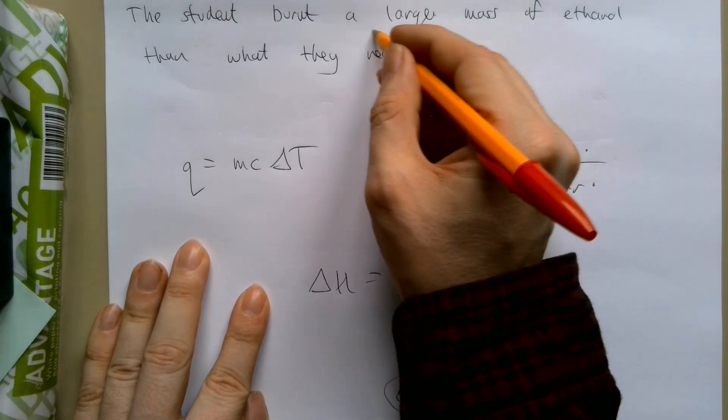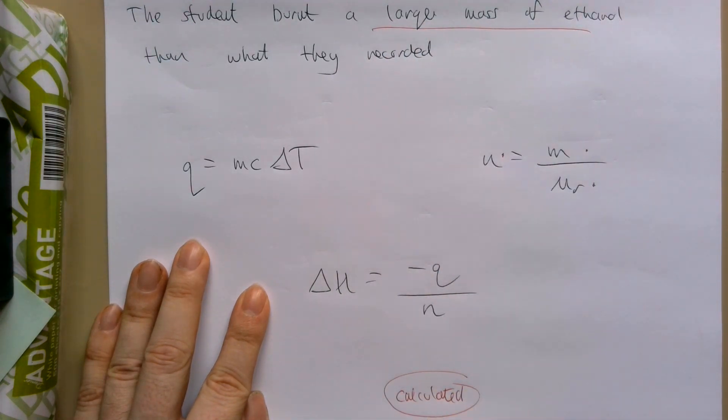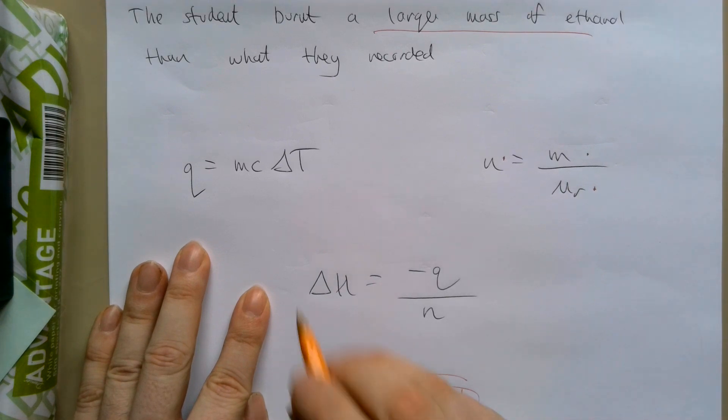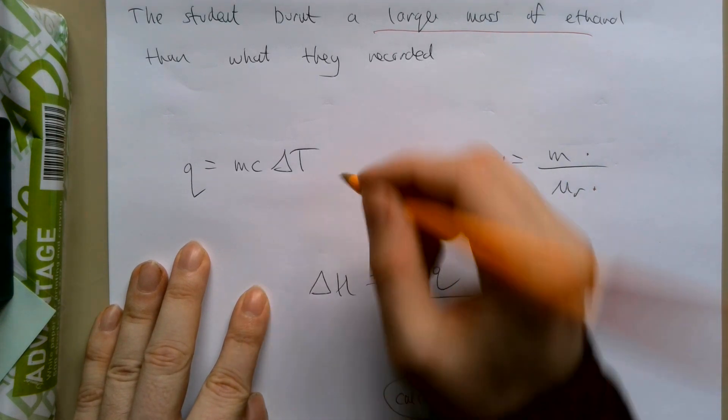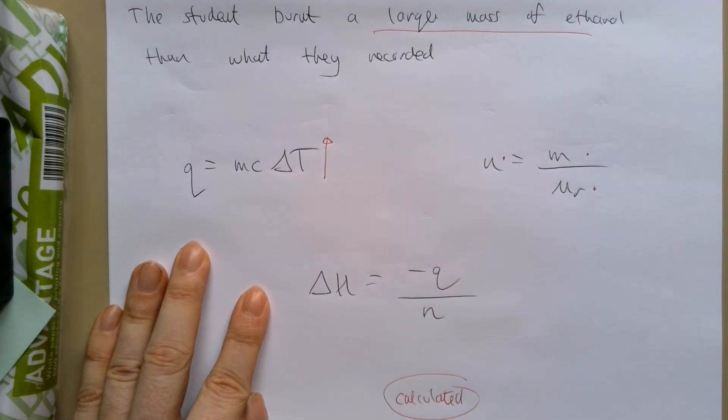However, if they burned a larger mass of ethanol, when they look at their temperature readings, they'll find that the temperature went up by more. So their delta T that they will record has increased. Therefore, the heat has increased.